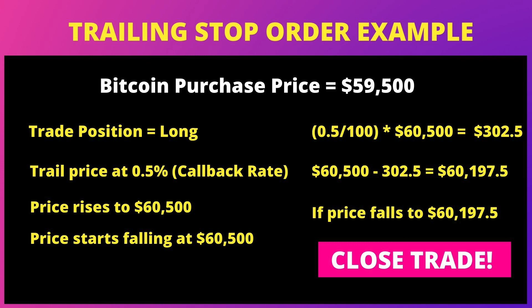But if the price of Bitcoin starts to fall, and let's say the price started falling at around 60,500, the trailing stop order is going to stop moving and it will keep checking the current price to see the percentage that the current price is away from 60,500. So if the price falls up to 0.5% of 60,500 — 0.5% of 60,500 is 302.5, and 60,500 minus 302.5 equals 60,197.5 — the trailing stop order is going to sell my Bitcoin at that point. Remember I bought my Bitcoin at 59,500, so at 60,197.5 where it sold, I was still at a profit.